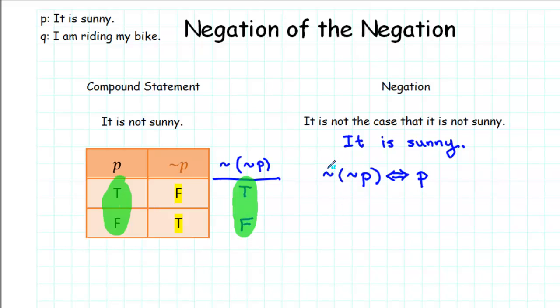So we can see that if we have the negation of a negation, then the two negations, in essence, cancel each other out. And we're just left with the original statement that we started with, which in this case is P.